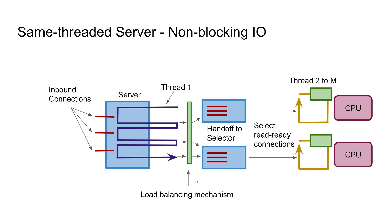For this server design to perform well, you need some kind of load balancing mechanism between thread one, which accepts inbound connections, and the threads processing those connections. Without a sensible load balancing mechanism, you risk all connections being assigned to one thread, under-utilizing the hardware and giving clients a worse experience.